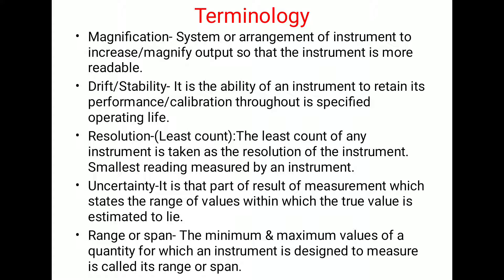The next is range or span — the minimum and maximum values of a quantity for which an instrument is designed to measure. The instrument has limitations; for example, a range can start from 0 up to 100 or beyond. Whatever maximum and minimum limits are specified for a measuring instrument, the quantity to be measured will vary between those values — this represents the range or span of that measuring instrument.